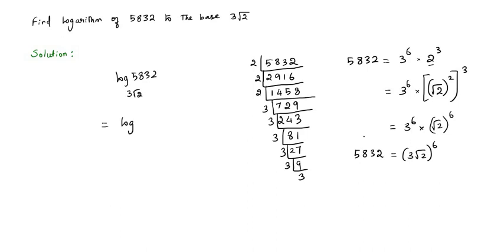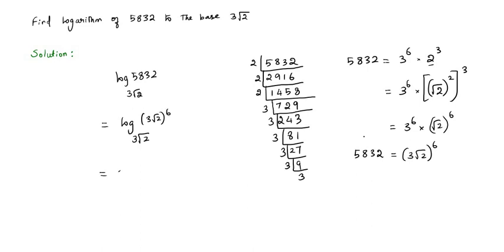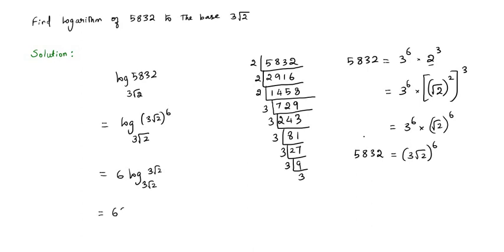We can replace 5832 with (3√2)⁶, so the logarithm becomes log base (3√2) of (3√2)⁶. Using the power rule of logarithms, we move the exponent 6 in front: this becomes 6 × log base (3√2) of (3√2). Since the argument and base are equal, any such logarithm equals 1. Therefore 6 × 1 = 6, and the logarithm of 5832 to the base 3√2 is equal to 6.